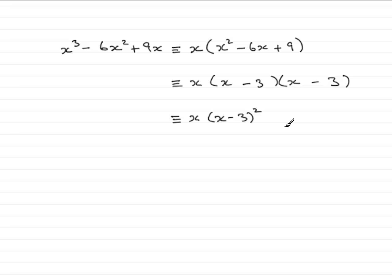All right, so that's the first part. Factorise completely x cubed minus 6x squared plus 9x.